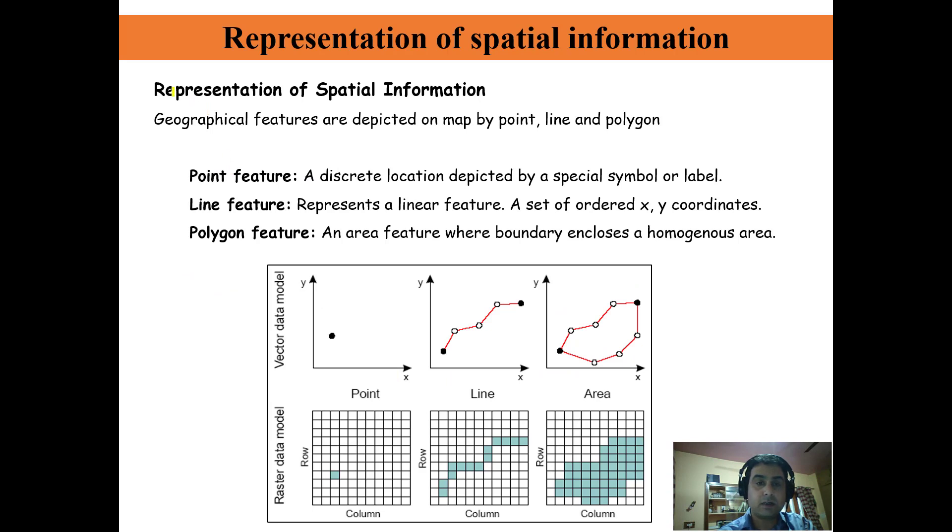This is the spatial representation of raster data model and vector data model. As we know, each physical feature on the earth can be represented either by a point, or by a line, or by a polygon feature.